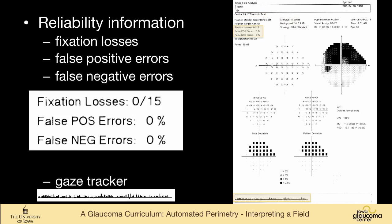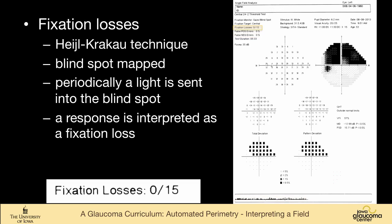We want to make sure that the field is reliable. So there are four reliability parameters on a SITA field: fixation losses, false positive errors, false negative errors, and the gaze tracker.